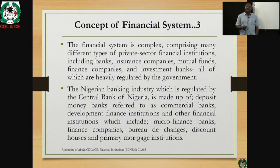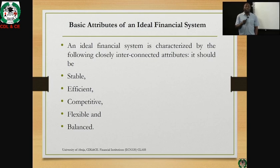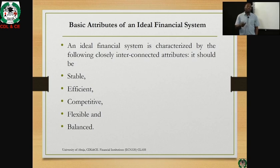These are the basic attributes of an ideal financial system. For a financial system to be healthy, it must have the following: First, stability. One of the critical issues with financial institutional systems of any country is instability. The moment a financial system faces instability, the players in that system will suffer, thereby affecting the activities of the financial system.